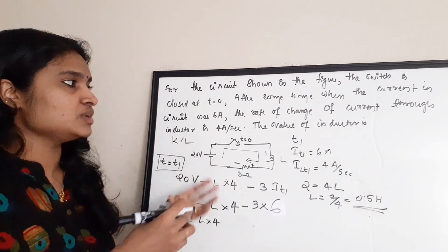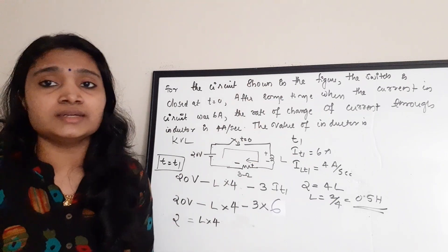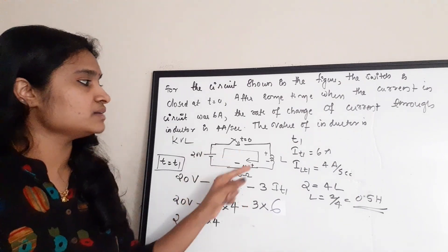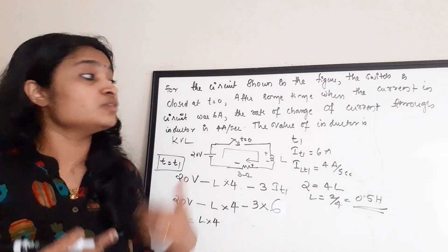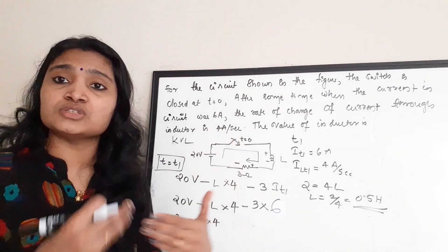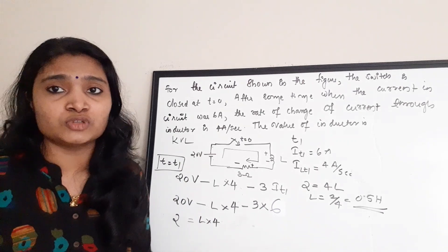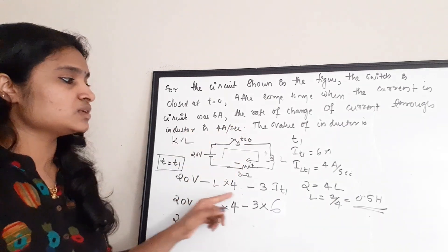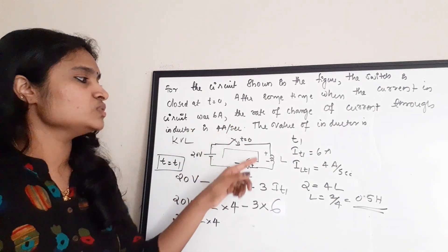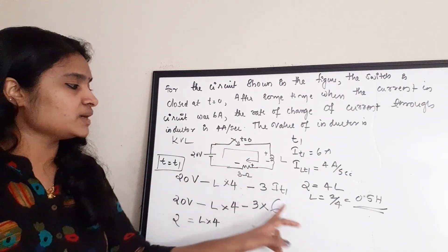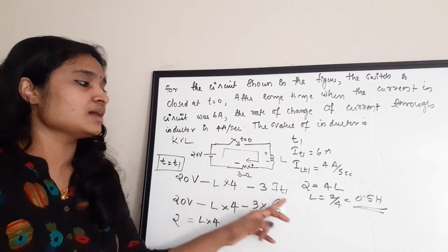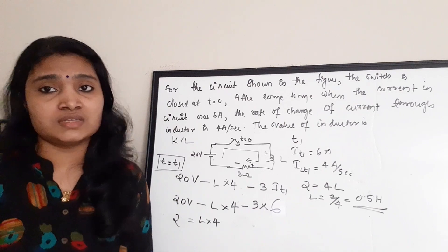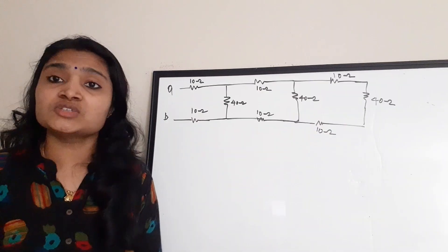This is actually a simple question — you just need to understand the problem statements correctly. At some time t1, the current is 6 A and the rate of change of inductor current is 4 A/s. Write Kirchhoff's Voltage Law for the simple loop, substitute the values for the rate of change of current through the inductance and the current value for the resistance. The answer is L = 0.5 henry.